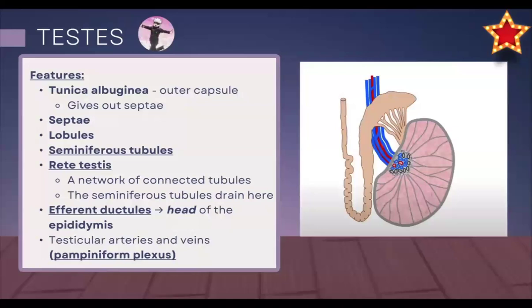Starting off with the testes. The testes, as I mentioned, is responsible for sperm production. Starting from outside to inside, we start with the tunica albuginea — this is a tough fibrous capsule on the outside. The tunica albuginea gives off septa, indicated by the gray lines. Within each septum you have lobules — the pink areas. Within each lobule you have something called the seminiferous tubules, which are coiled structures, and this is where spermatogenesis occurs.